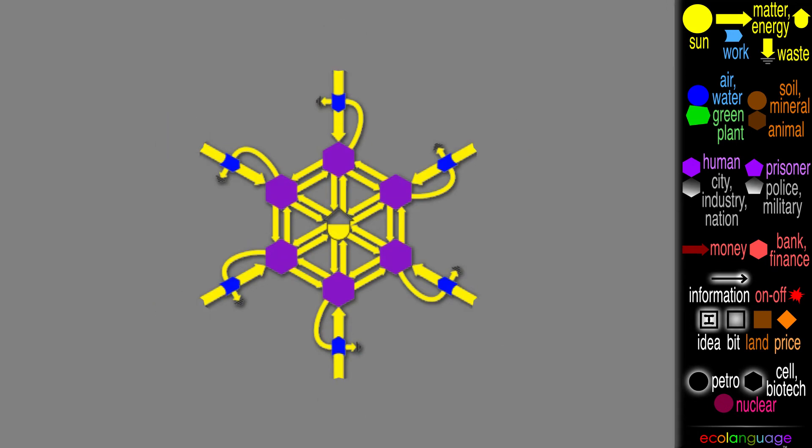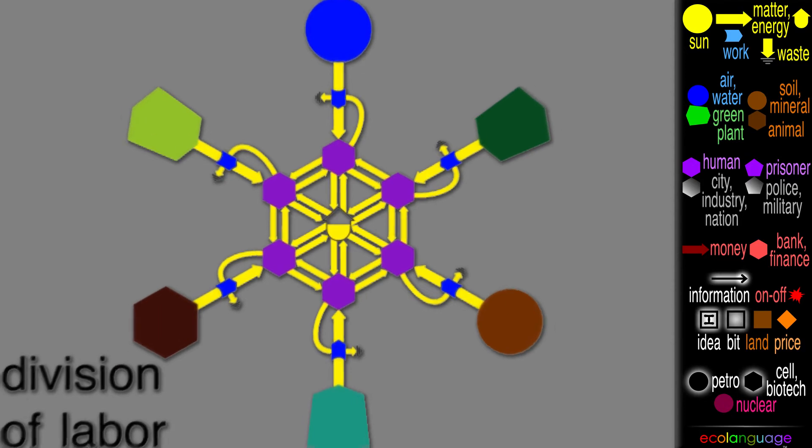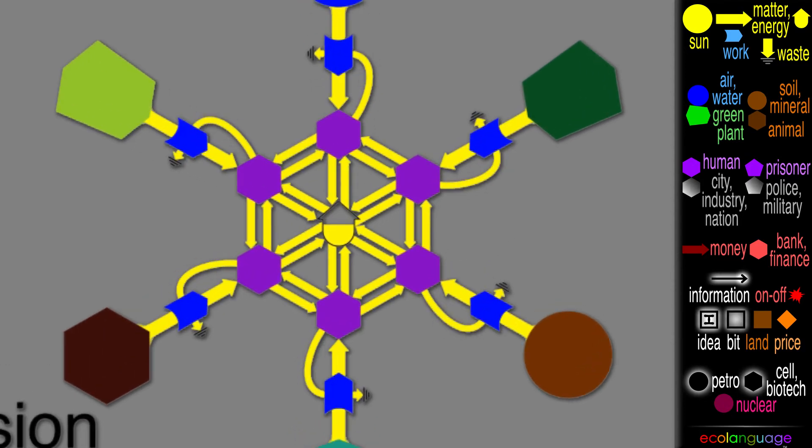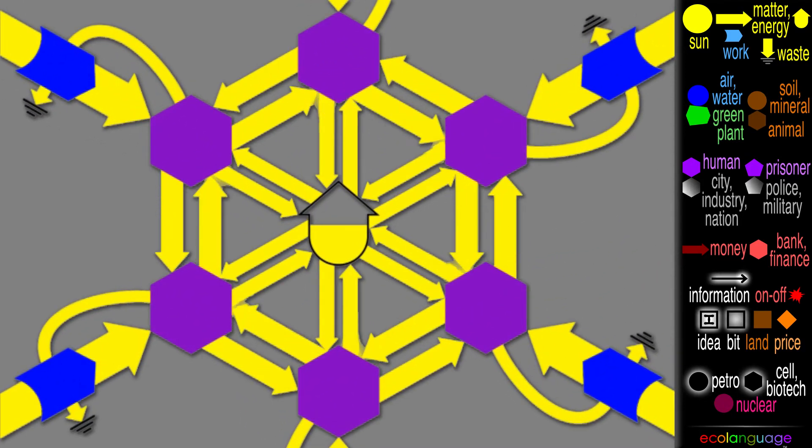Instead of the same inputs, they can work on different inputs. This is called the division of labor. Then they get better at it, so the whole thing grows more.